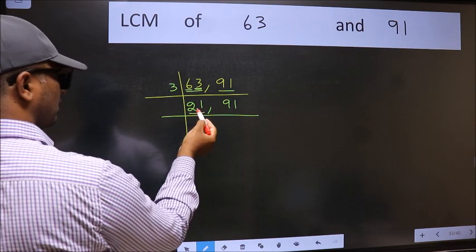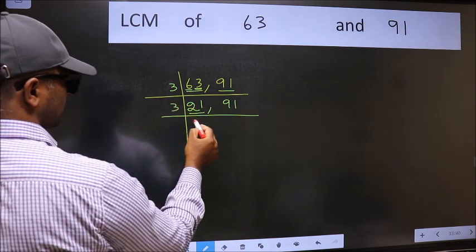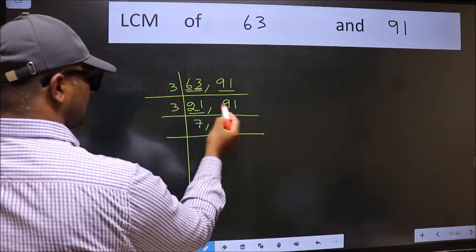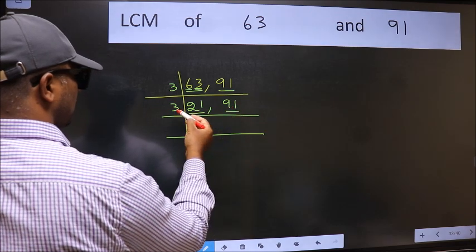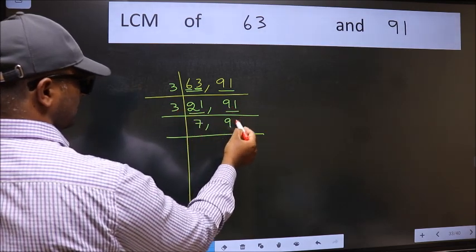Now here we have 21. 21 is 3 times 7 is 21. The other number 91 is not divisible by 3, so you write it down as it is.